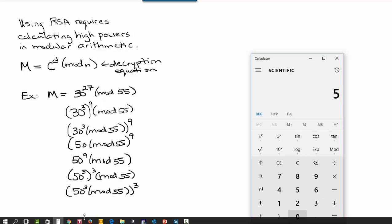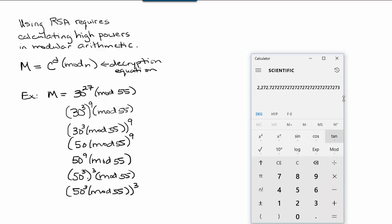50 to the 3rd is 125,000. We want to divide that by 55 and find the remainder. Dividing by 55, we get this very long decimal. It's the decimal portion of this number that represents the remainder over 55. So, I'm going to subtract off the whole number part, 2,272, leaving only the decimal portion, multiply by 55 to reverse the process. So, the remainder is actually 40.